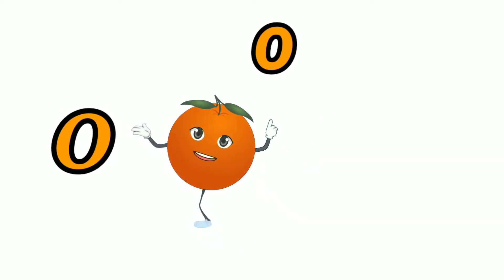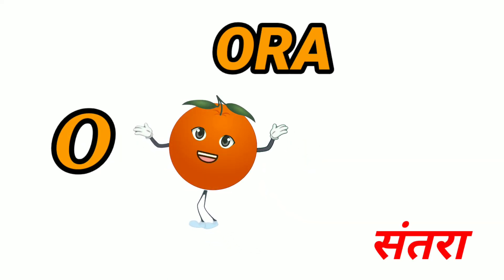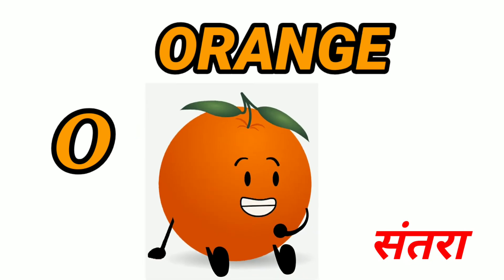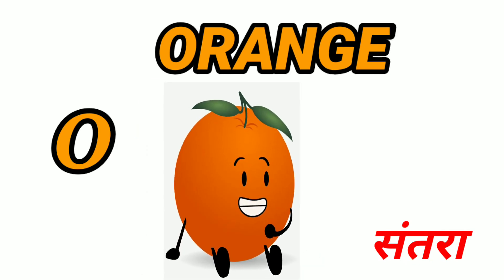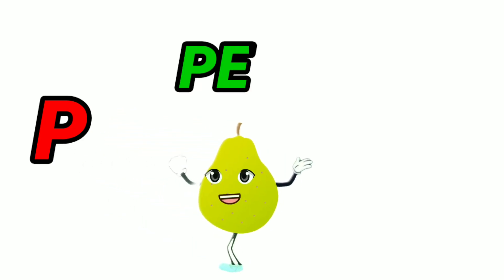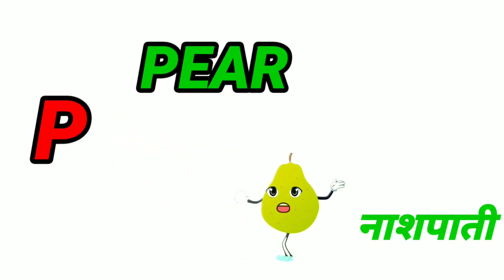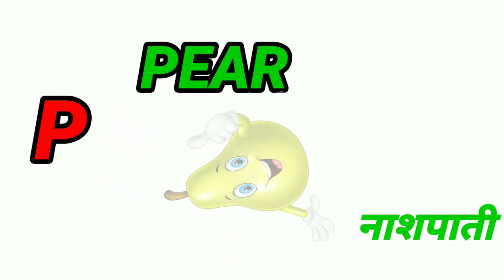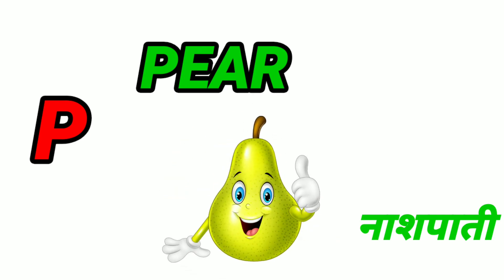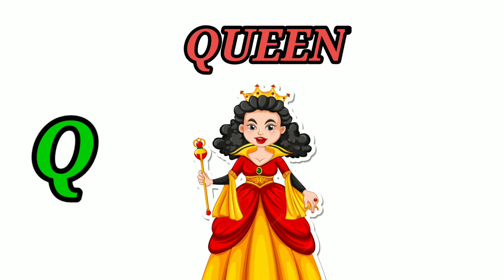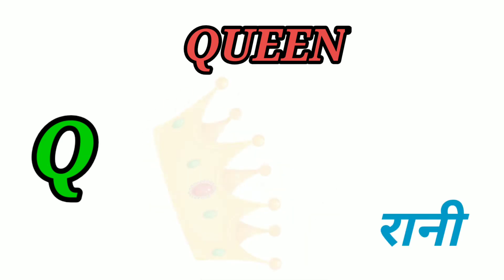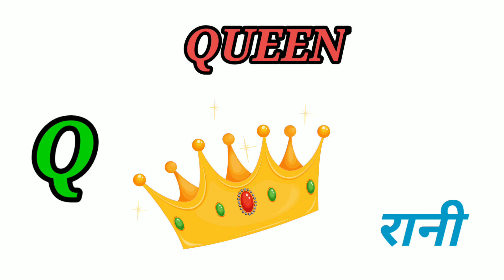O for Orange. Orange means Santra. P for Pear. Pear means Nashpati. Q for Queen. Queen means Rani.